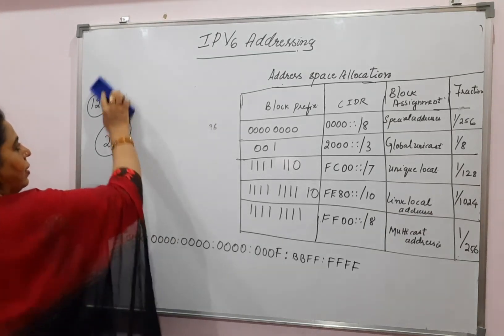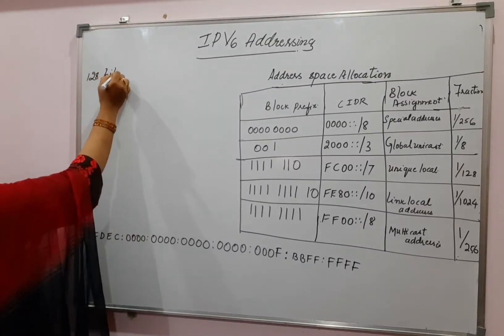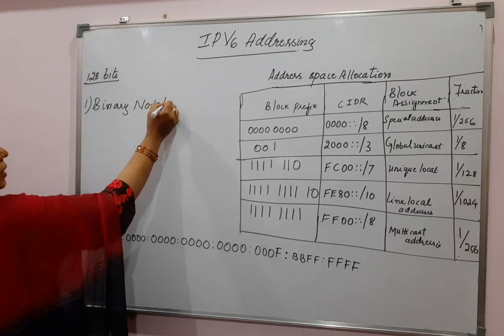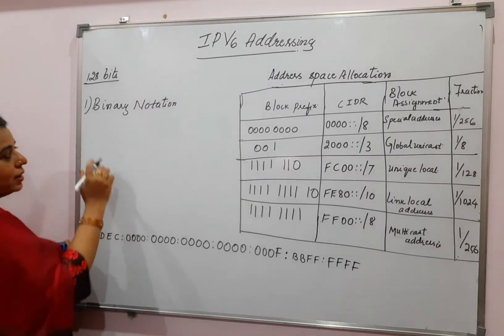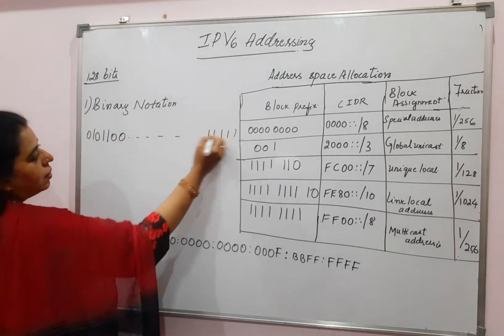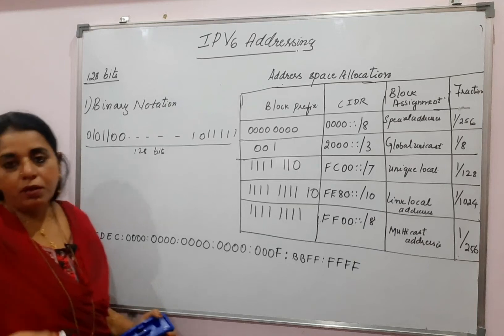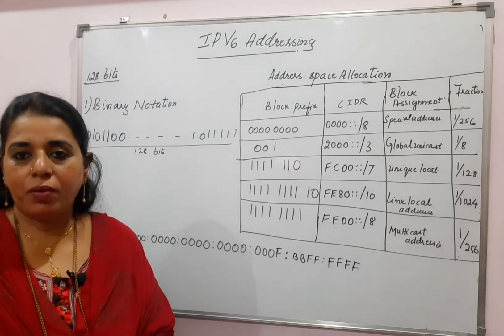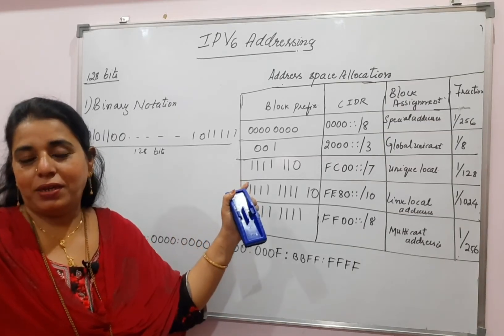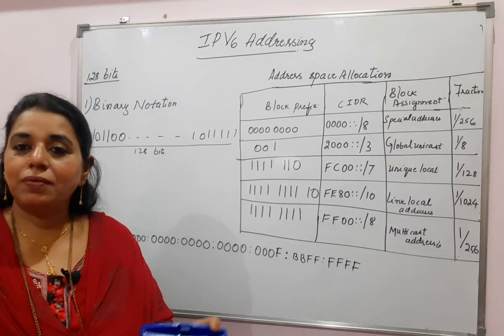When you have to write one particular IP address in IPv6, you have 128 bits to write. There are different notations used here, similar to IPv4. In binary notation, you write in terms of ones and zeros only — like 0, 1, 0, 0, 1, 0, 0, 0 — all 128 bits. This binary notation is always used in computers and machines, but it is difficult to use for human communication.